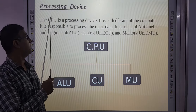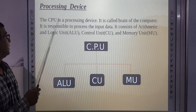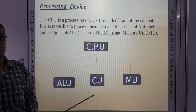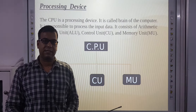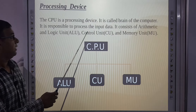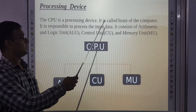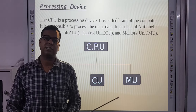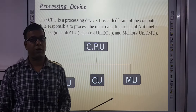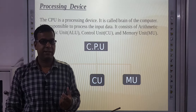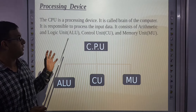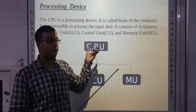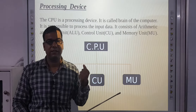Next is the processing device. The CPU is a processing device. The full form of CPU is Central Processing Unit. It is called the brain of the computer. Just like the brain is the most important part of the human body, similarly CPU is the most important part of the computer.